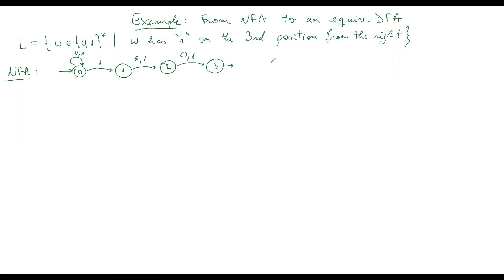In one of the previous videos I also constructed a DFA for this language, and that construction was quite intricate — I had to explain a lot to make a convincing argument for why that automaton is exactly the one we need. Eventually I built it starting from state S0, where we stay with '0' as long as possible. You can watch one of the previous lectures to see all the arguments for why the automaton was built that way.